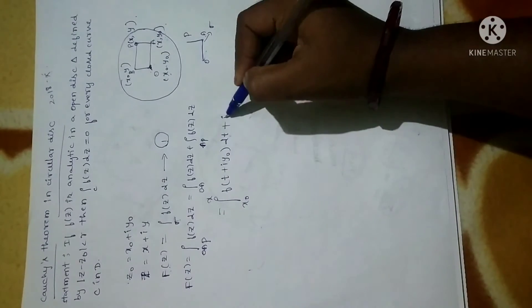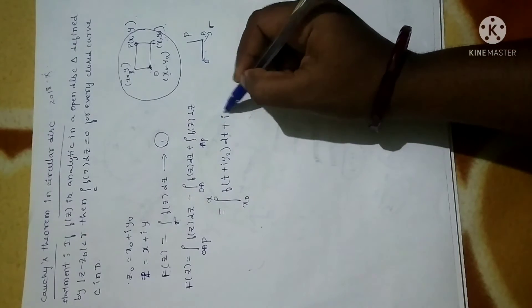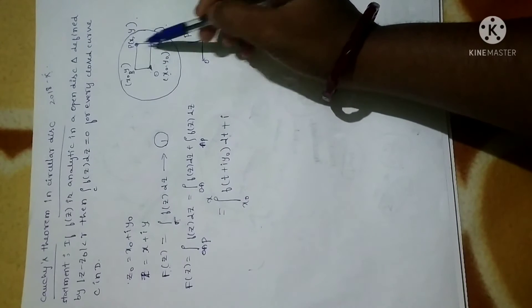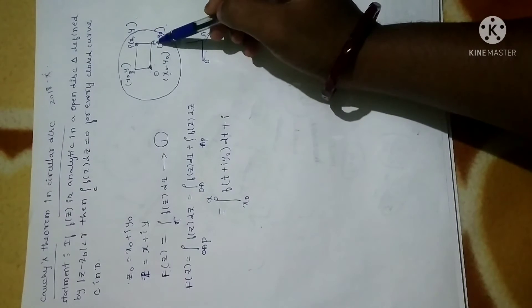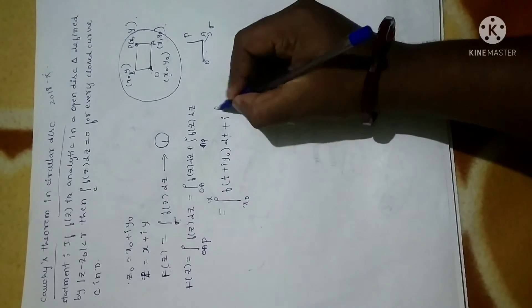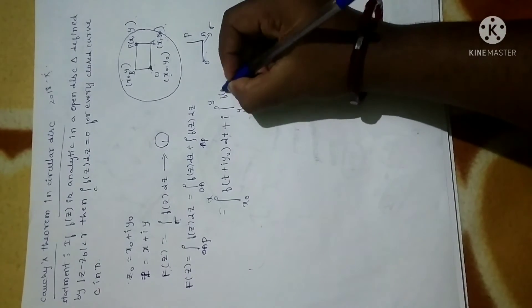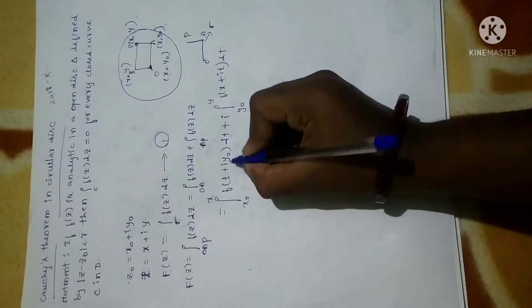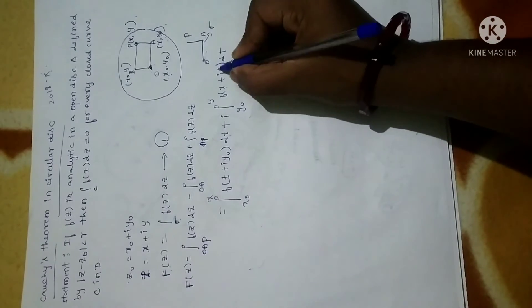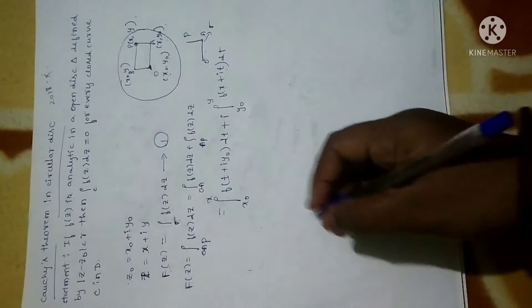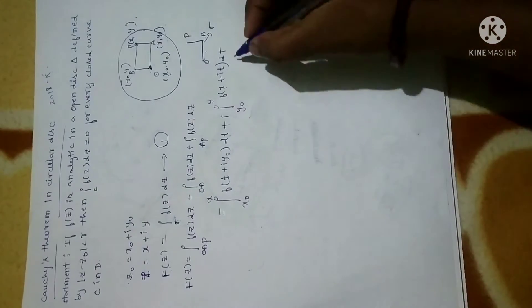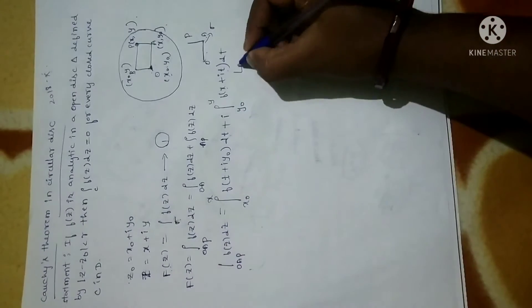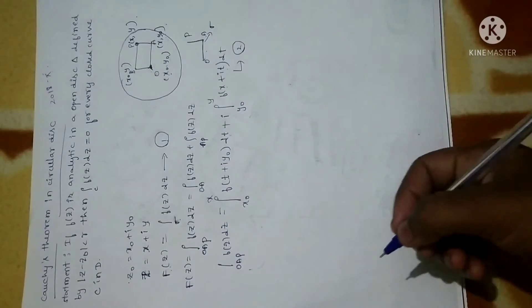Along OA, we integrate from x₀ to x of f(t + iy₀) dt. For segment AP, which is in the y-direction, x is treated as constant, so we integrate with respect to y. The integrand is a function of t of the form x + it. This gives us equation 2: F(z) = ∫(OAP) f(z) dz.